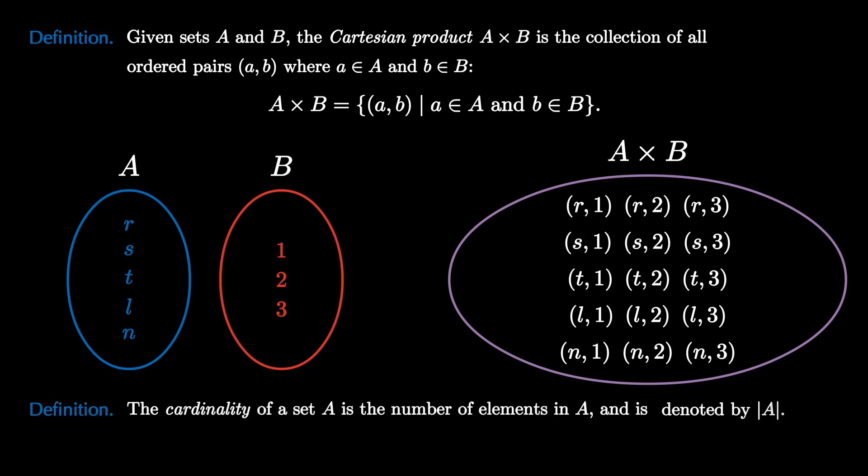By the cardinality of a set A, we just mean the number of elements in the set A, and we denote it by putting two bars on either side of the set A. I'll leave you with a final exercise. Can you find a formula for the cardinality of the Cartesian product A times B in terms of the cardinalities of A and B?